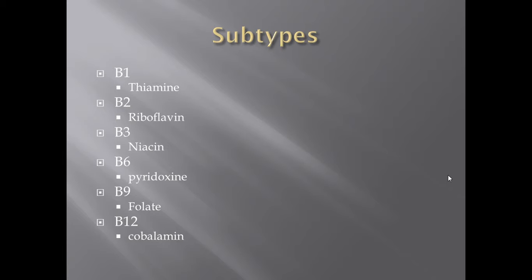Each subtype has a different name. B1 can also be called thiamine — not to be confused with thiamine, which is a base; there are different spellings. B2 is riboflavin, B3 is niacin, B6 is pyridoxine, B9 is folate, and then the always important B12.